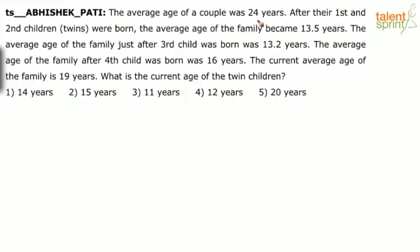The average age of a couple was 24 years. After their first and second children — twins — were born, the average age of the family became 13.5 years. The average age of the family just after the third child was born was 13.2 years. The average age of the family after the fourth child was born was 16 years. What is the current age of the twin children? Options given are 14 years, 15 years, 11 years, 12 years, and 20 years.